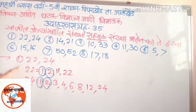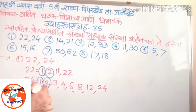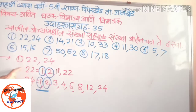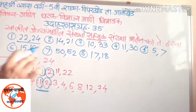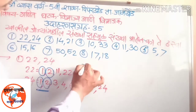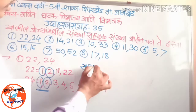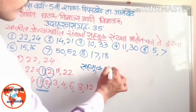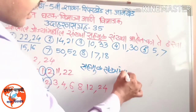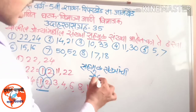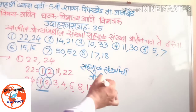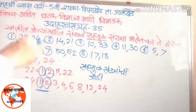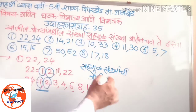Two numbers are not divisible by 2. Then 2 is not a common divisor. Because these numbers are not divisible by 2, it is not a common divisor. These two are not the same.